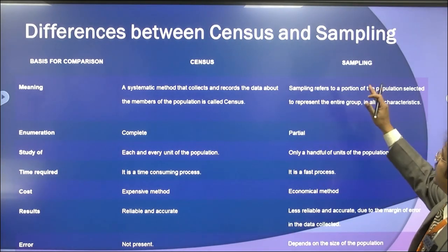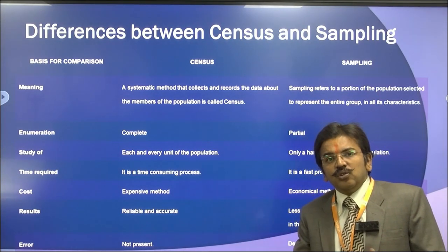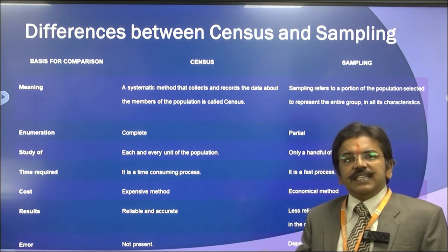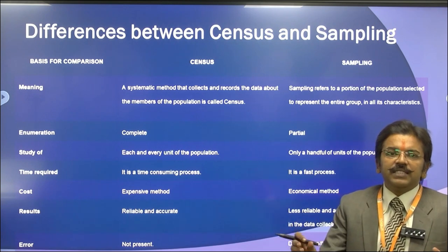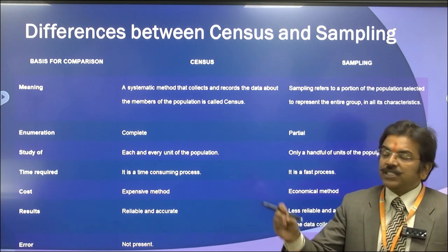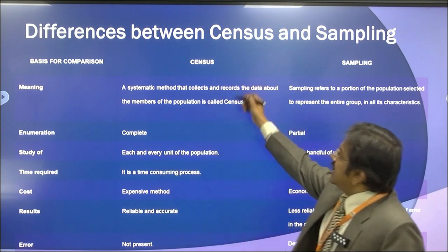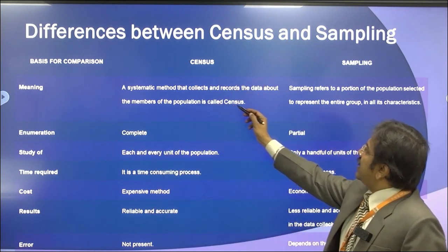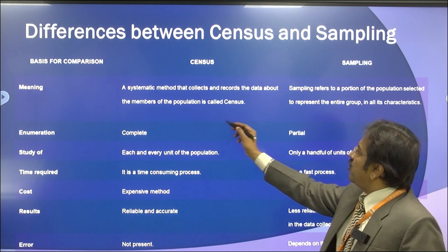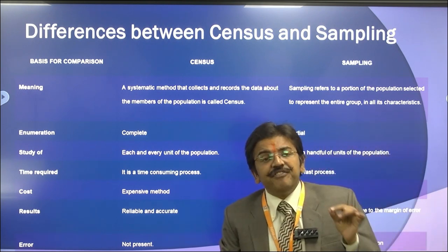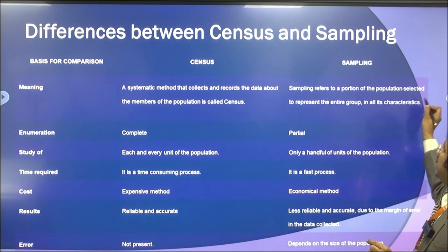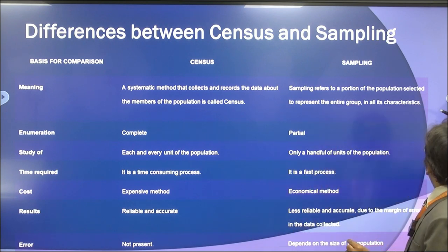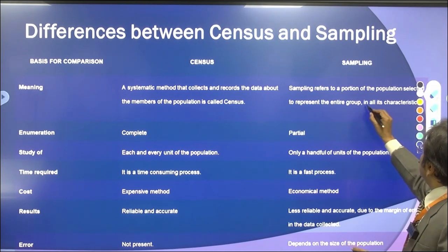Now, the difference between census and sampling. In census, each and every individual is being considered, while in sampling, from the population we select certain units and say that it is our sample. In terms of meaning: census is a systematic method that collects and records data about every member of the population, while sampling refers to a portion of the population selected to represent the entire group's characteristics.